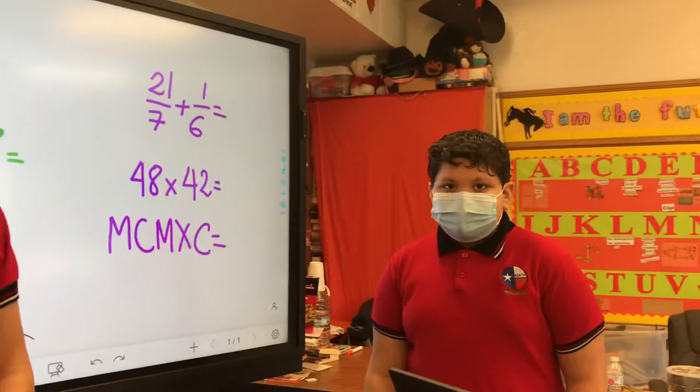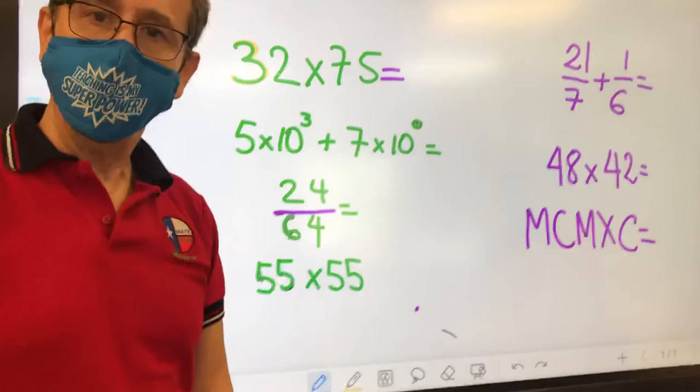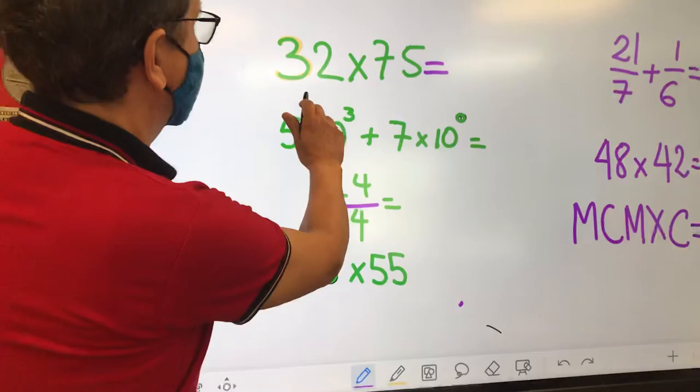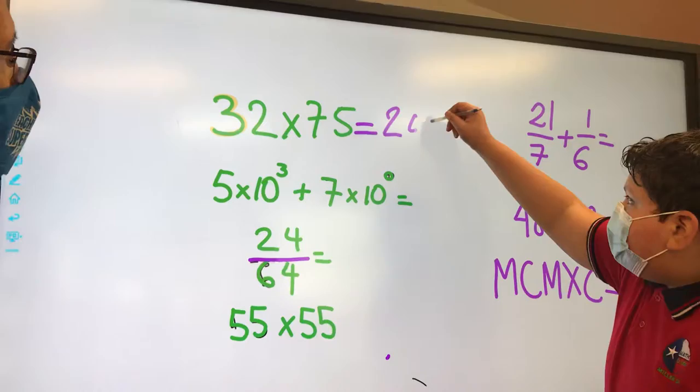Today we are with the champion of the Math Olympiad, Moises Hernandez. We are doing these problems, our common problems in the number sense competition. So this is 32 times 75, which is 3 fourths. What's the answer here?